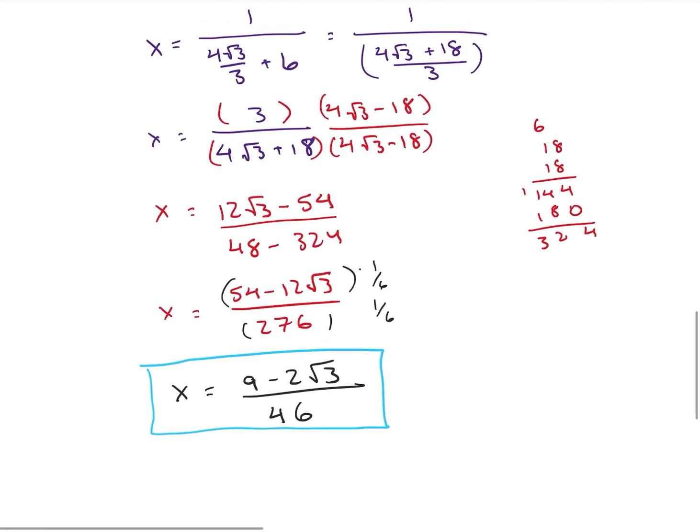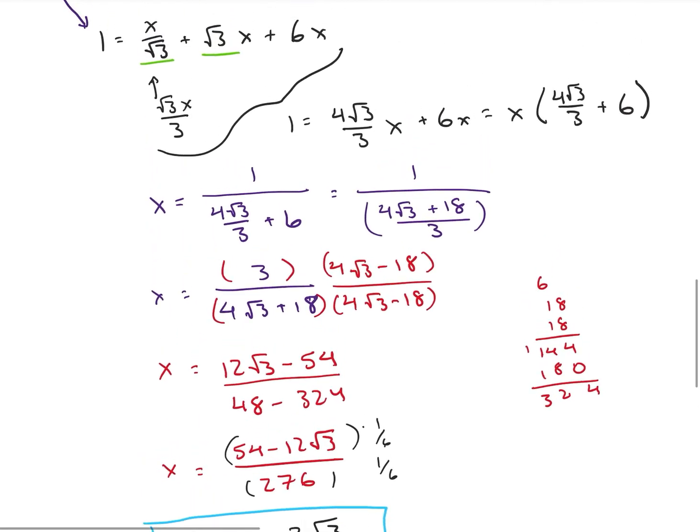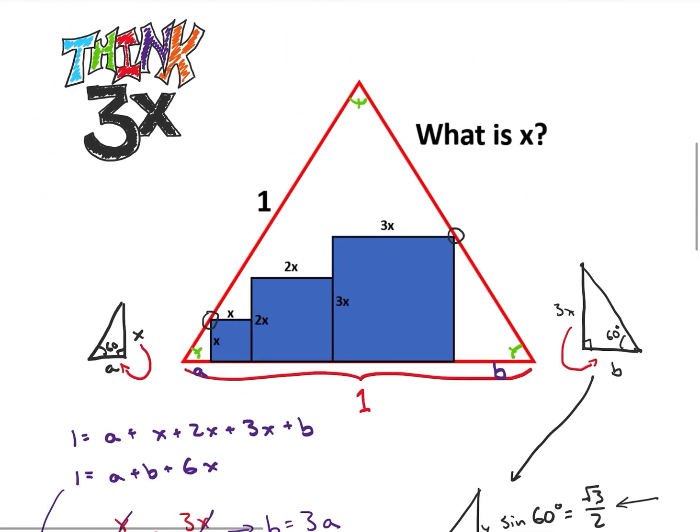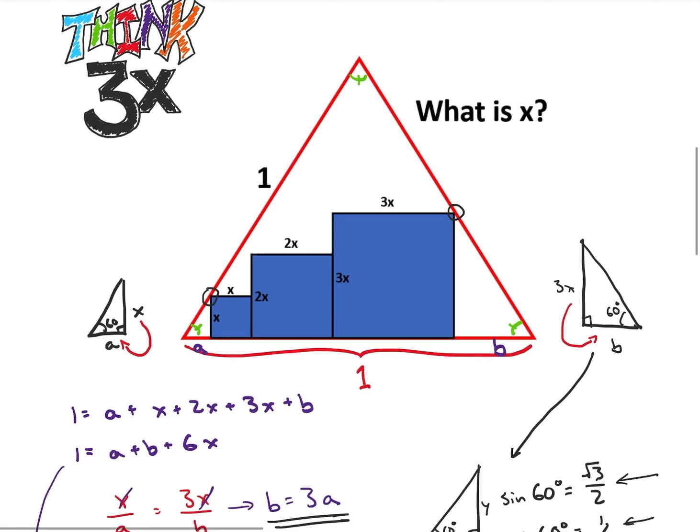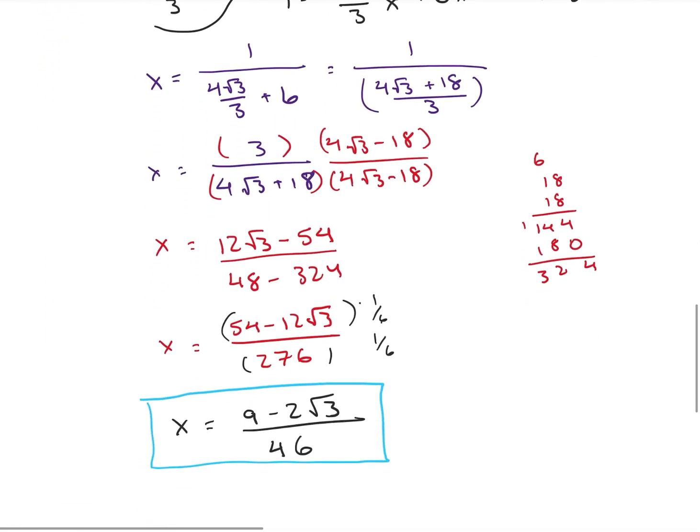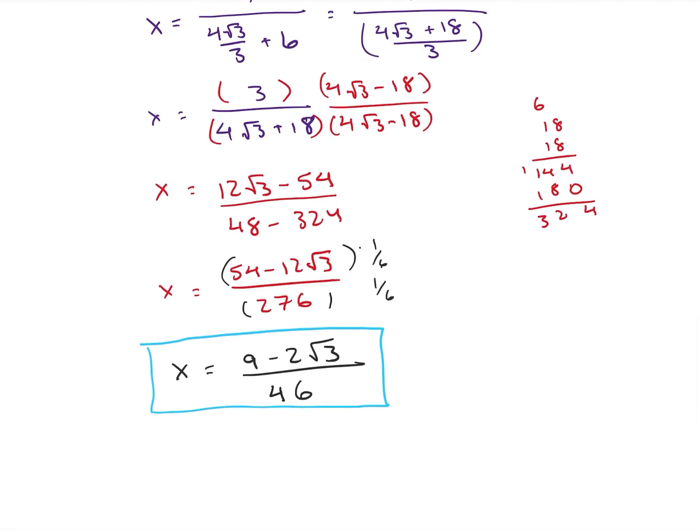So it turns out that if we have these three boxes in this triangle, how big is our x value in each of these? Well, if we have a side length of one equilateral triangle, our x is going to be 9 minus 2 root 3 over 46.